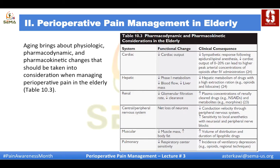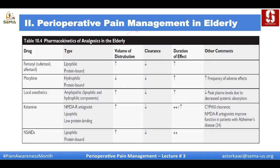In the respiratory system, decreased respiratory center sensitivity increases the incidence of ventilatory depression with opioids. A pharmacokinetic table shows changes with commonly used analgesics: for fentanyl, volume of distribution increases and clearance decreases, so duration of effect increases; morphine is the same. Local anesthetics have increased volume of distribution, decreased clearance, and increased duration. Ketamine has increased volume of distribution and decreased clearance. NSAIDs have increased volume of distribution with decreased clearance, so duration is roughly the same.